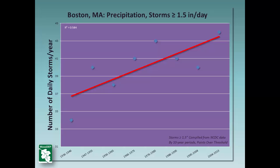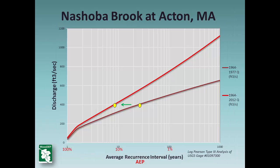Shifts in precipitation patterns in recent years are evident in Massachusetts, where rainfall data indicate that the number of daily storms per year with rainfall totals in excess of 1.5 inches per day is increasing over time. This upward trend is illustrated in the graph for Boston. Another important trend in Massachusetts is the increased frequency of larger flood events. This graph of the Neshoba Brook flood discharge records indicates that the historic 25-year flood discharge levels now occur at an 8.5-year recurrence interval.